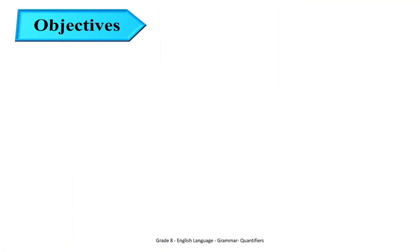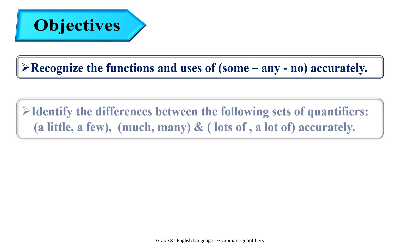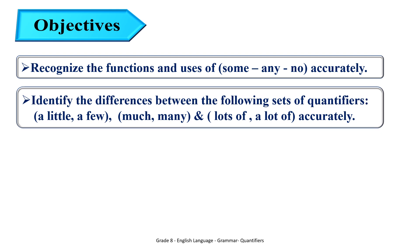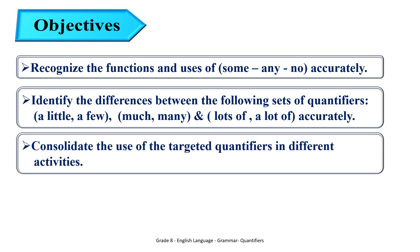For today's lesson we have three main objectives. First, recognize the functions and uses of some, any, and no accurately. Second, identify the differences between the following sets of quantifiers: a little, a few, much, many, and lots of/a lot of, accurately. Third, consolidate the use of the targeted quantifiers in different activities.